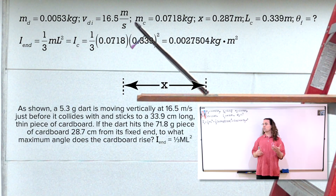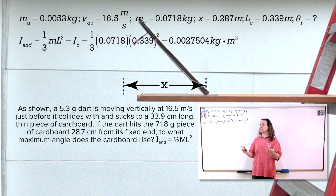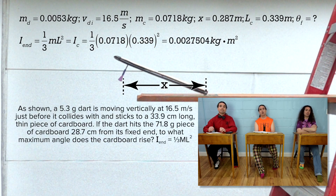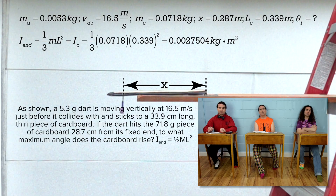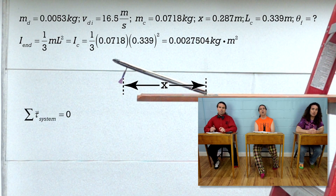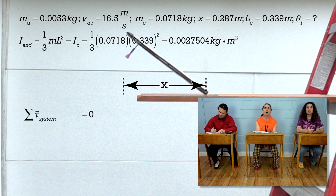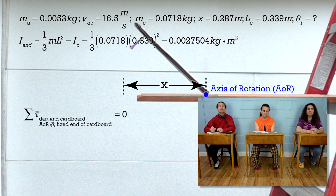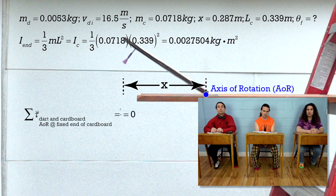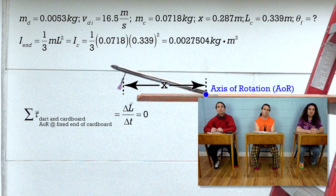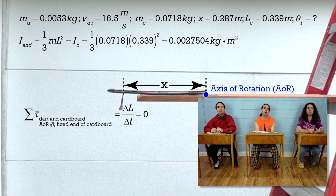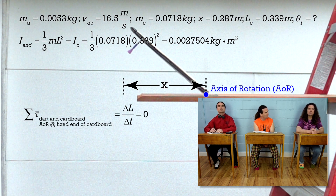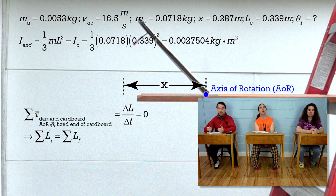Please walk us briefly through why angular momentum is conserved in this situation and begin solving the problem. We just did this last time, so we know angular momentum is conserved because there is no net torque acting on the system. The system is the dart and the cardboard, and the axis of rotation is at the stationary end of the cardboard. Net torque equals change in angular momentum over change in time, and when that equals zero, the change in angular momentum equals zero, so angular momentum is conserved.